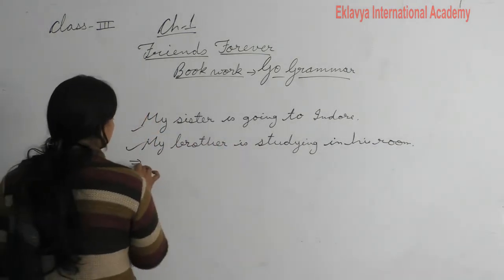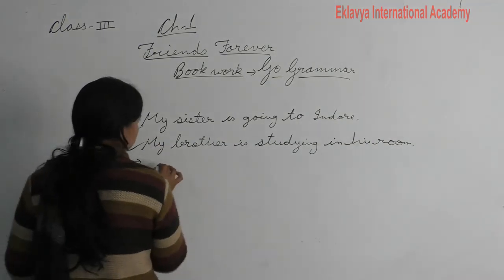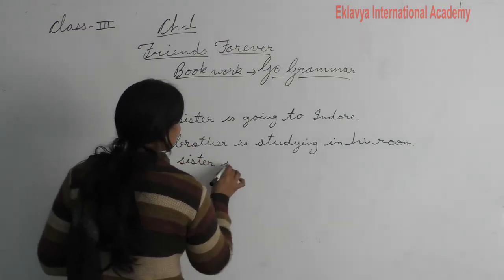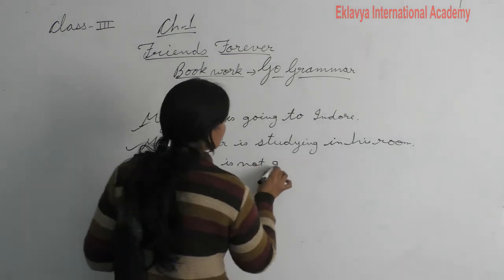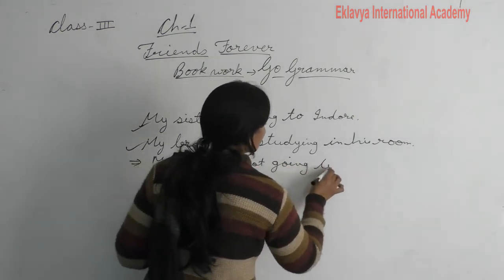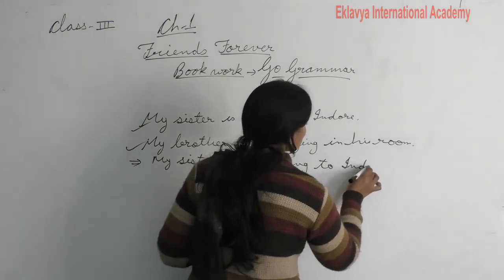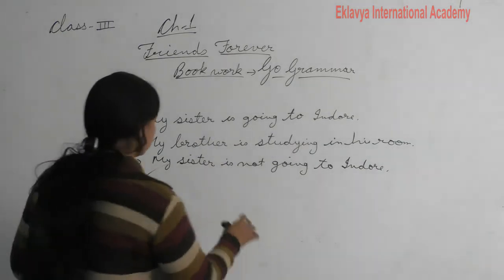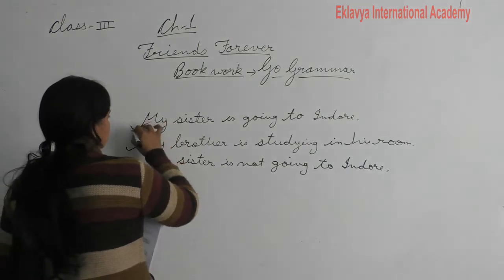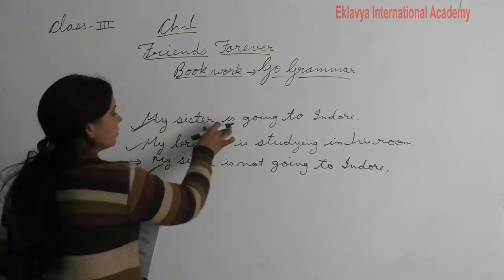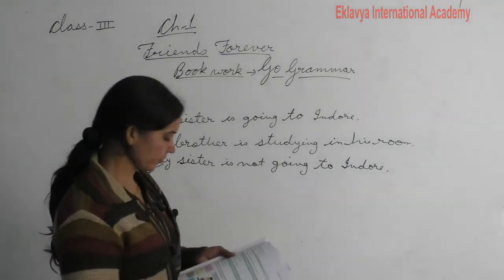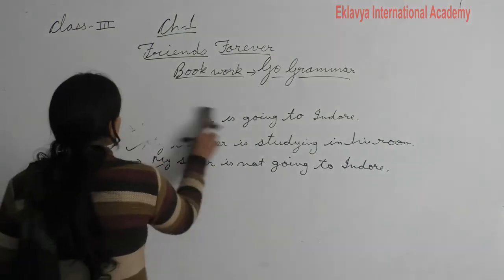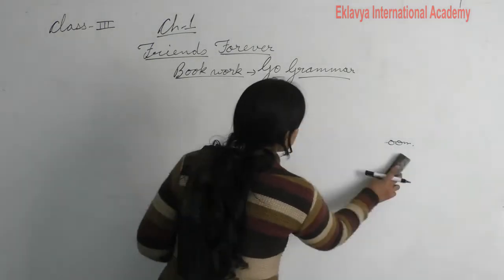If you make it negative, the sentence is still declarative — it can be a statement whether positive or negative. Now, the next one is imperative sentences. They mostly start with a verb, and the subject is hidden in this type of sentence.